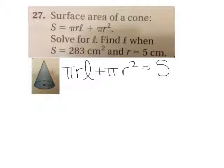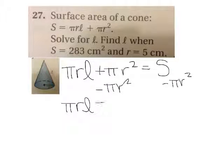And the first thing I want to get rid of is the stuff that's being added to the l term. So I'm going to subtract πr² from both sides, which will give me π times rl equals S minus πr².